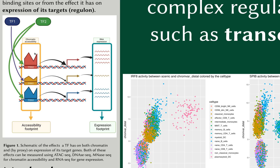Binding to the regulatory elements usually results in an increase in local chromatin accessibility, which we can detect using different methods such as ATAC-seq, DNase-seq, or various others.